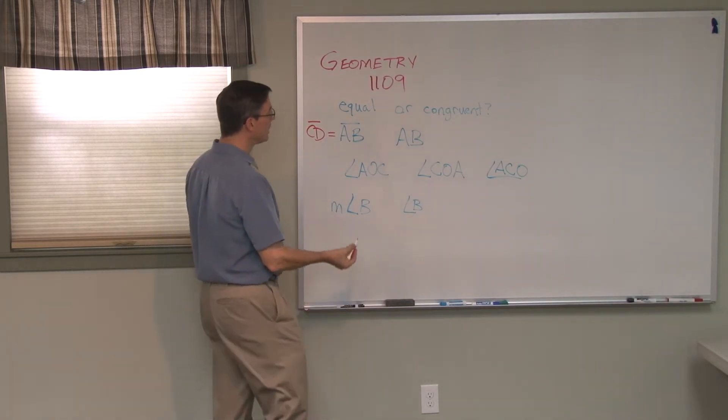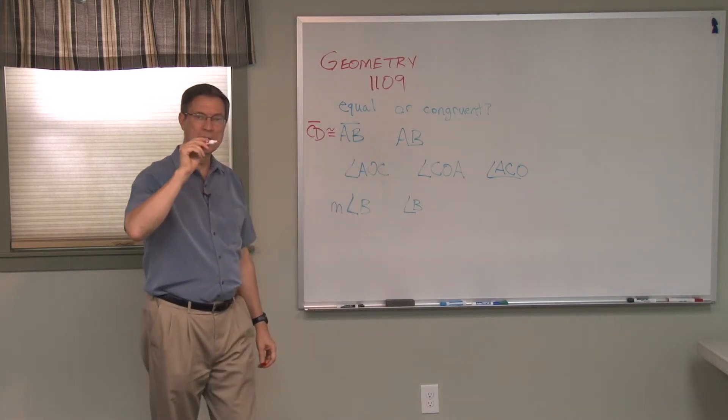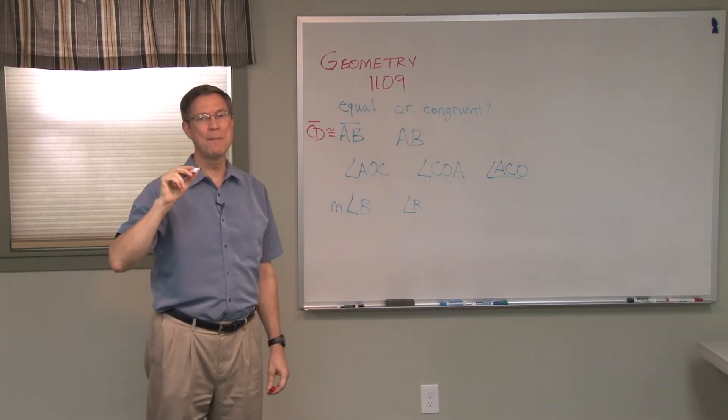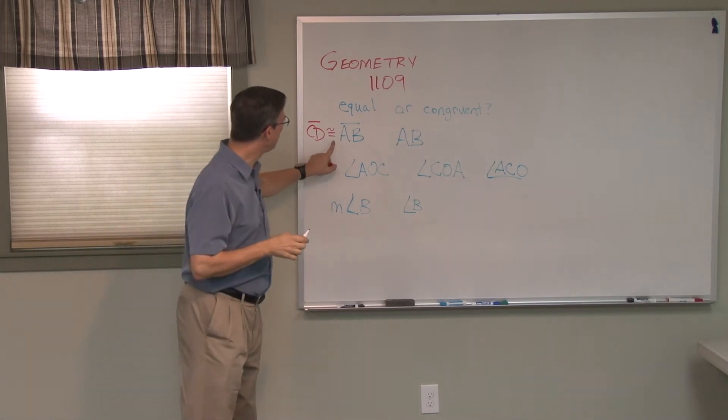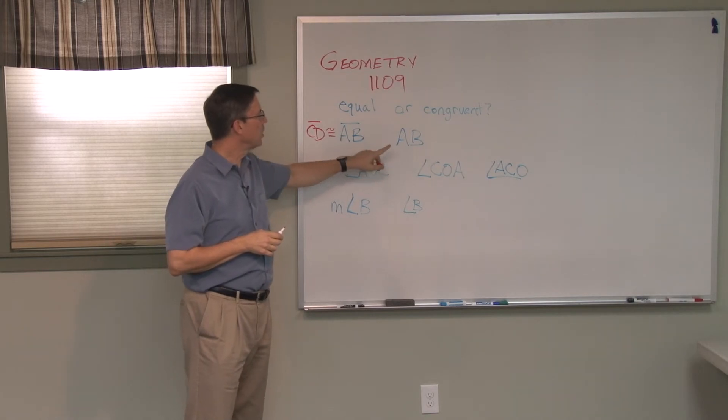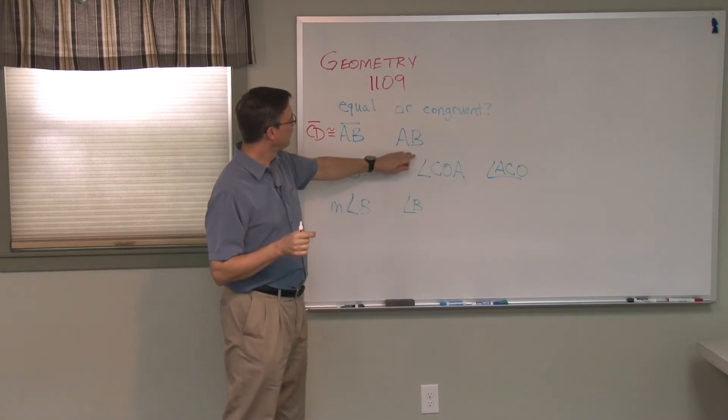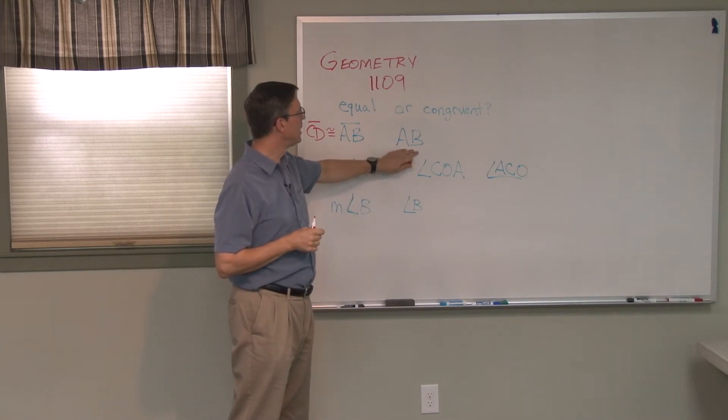Line segment AB does not equal line segment CD. If they are the same length, we would say they are congruent, and we put the little tilde sign on top of the equals. That refers only to the shape being the same.